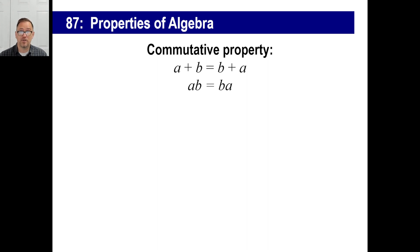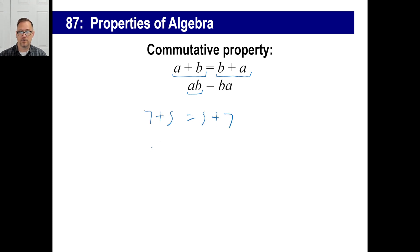The commutative property is basically this: it doesn't matter what order you put things in if you add them or if you multiply them. In other words, everybody knows that 7 plus 5 is the same thing as 5 plus 7. Everybody also knows that 7 times 5 is exactly the same thing as 5 times 7. That's the commutative property.